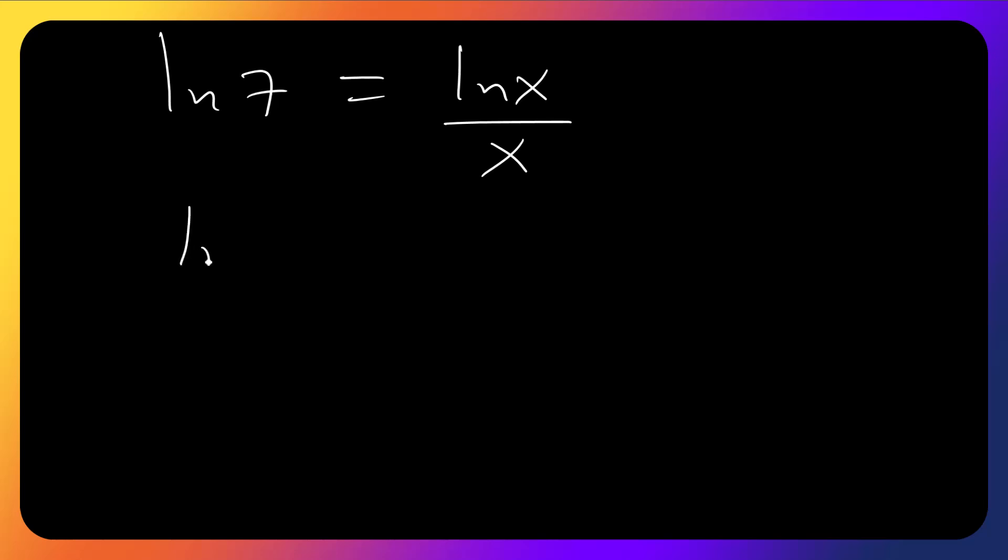Let's write this as ln 7 in linear form. This side will be ln x times x to the power minus 1.